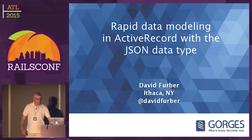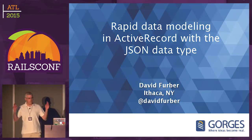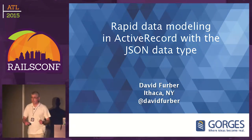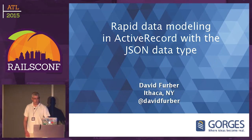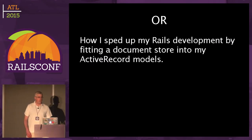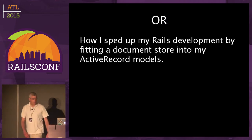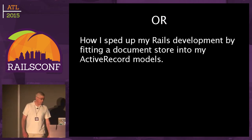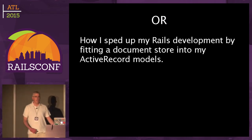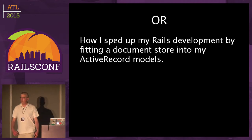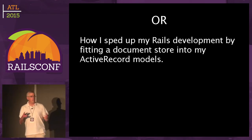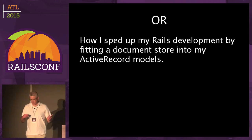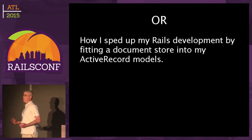I'm going to be talking to you about rapid data modeling and ActiveRecord with the JSON data type, specifically the JSON data type in Postgres. Another title could be: how I sped up my Rails development by fitting a document store into my ActiveRecord models. I'll fill in the blanks as I go along, but I'm mainly going to tell a story of some projects out of which this emerged.